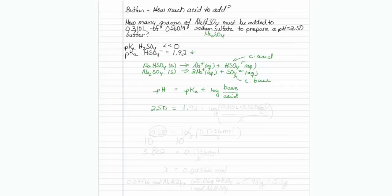My target is a 2.50 pH. My pKa is 1.92 plus log. I know how much base I have. If I take 0.310 liters times 0.560 mole per liter, which is the concentration, I have my amount of base in solution in units of moles. Now I'll just use x to represent how many moles of sodium hydrogen sulfate I need to add.